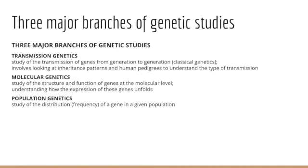I want to look at the three branches of genetic studies. The branch dealing with the transmission of genes from generation to generation is called transmission genetics — sometimes called classical genetics or Mendelian genetics. It focuses on the genotypes of individuals and will be the primary study of this course; we will consider simple inheritance patterns in the human pedigree to examine transmission. In contrast, the branch dealing with the structure and function of genes at the molecular level — analyzing molecular events involved in gene expression — is called molecular genetics.